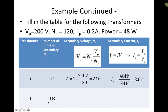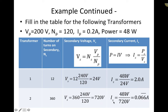For transformer two with 360 secondary turns, the secondary voltage equals 360 turns times (240 volts divided by 120 primary turns), giving 720 volts. The current is 48 watts divided by 720 volts, which gives approximately 0.0667 amps. There are three times as many turns in the secondary compared to the primary, so the voltage has gone up by a factor of three. This is a step-up transformer: it steps up the voltage, but the current is reduced — you can't get something for nothing.